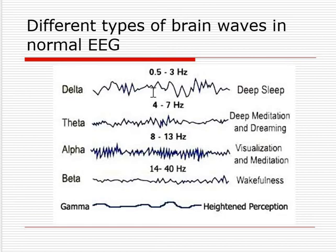Here is the waveform diagram. The delta waveform is 0.5 to 3 Hz and it represents deep sleep — when a person is in deep sleep, the scalp waveform obtained will be delta. Theta is 4 to 7 Hz and represents deep meditation and dreaming.